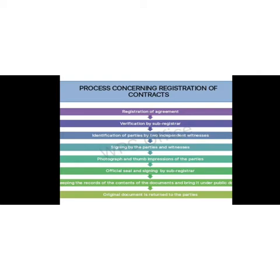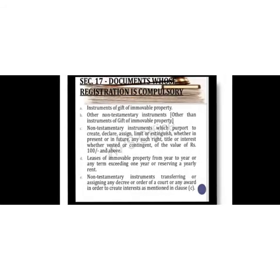Next, we will be talking about the documents which require compulsory registration. The documents which must be registered are: number one, instruments of gift of immovable property under Section 17(1)(a) of the Registration Act 1908; number two, instruments under Section 17(1)(b); number three, receipt of consideration under Section 17(1)(c); number four, leases under Section 17(1)(d); number five, transfer of decree, order, or award of court under Section 17(1)(e); and number six, authority to adopt a son under Section 17(3).